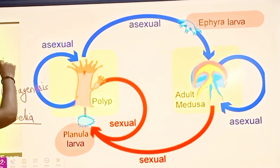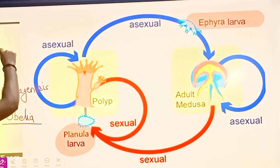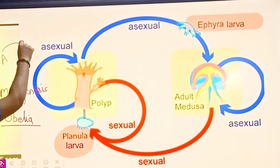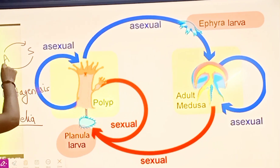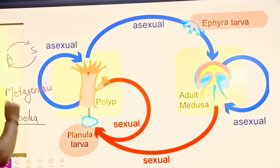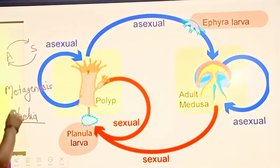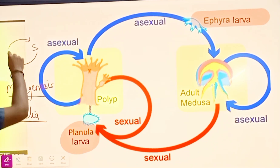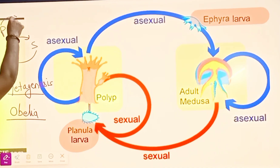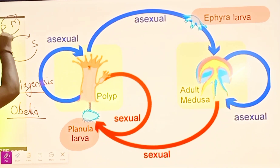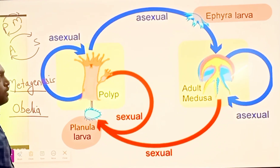Most of the time students are confused about what metagenesis is. Remember: when the asexual form alternates with the sexual form, we call it metagenesis. This means there is a polyp and a medusa form which alternate with each other.